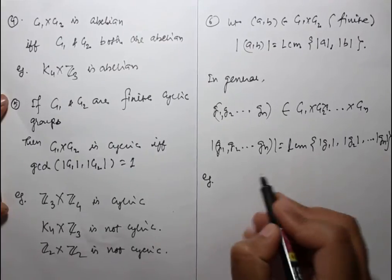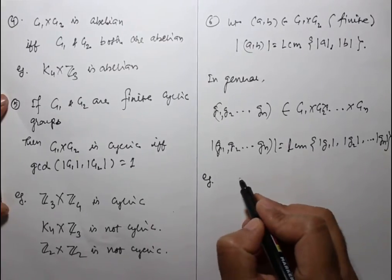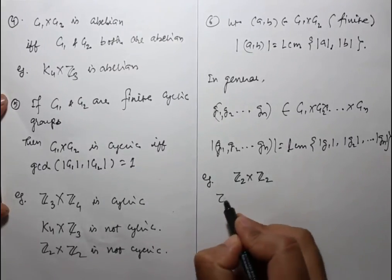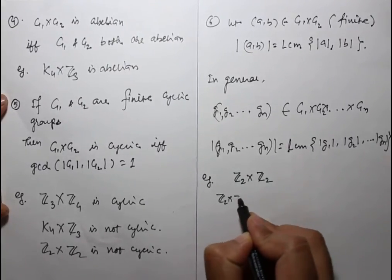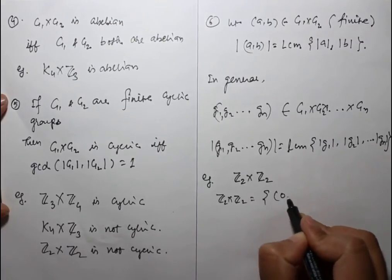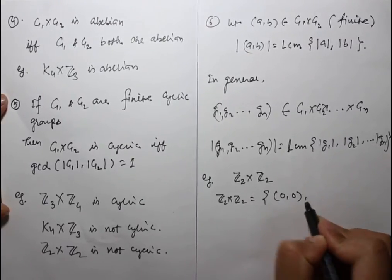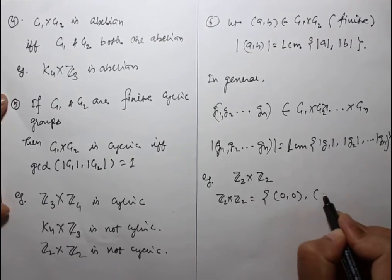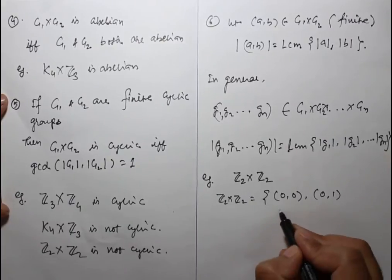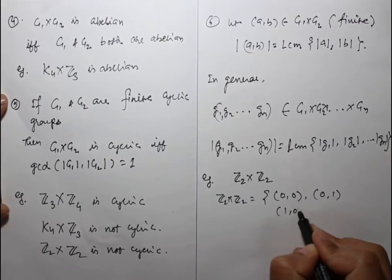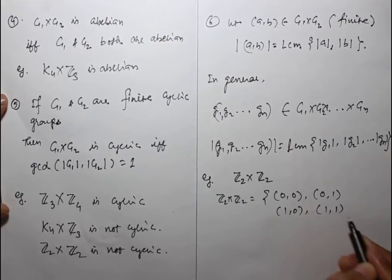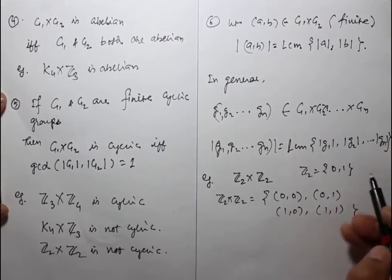For example, consider Z2 cross Z2. Its elements are (0,0), (0,1), (1,0), and (1,1).